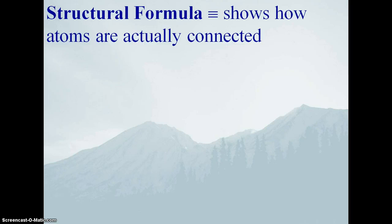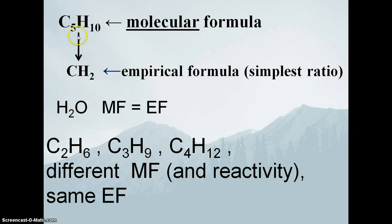Our third kind of formula is what is known as a structural formula. As we start drawing molecules and talking about chemical reactions, how the molecule is actually connected — who is bonded to whom — is really important. For example, given the molecular formula C5H10, there are lots of different ways to arrange those five carbons and ten hydrogens, making several different structures that all have different chemical reactivity. So just writing C5H10, you should rightly ask: which one? Is it arranged this way, or this way, or another way entirely?